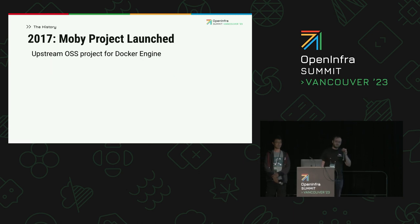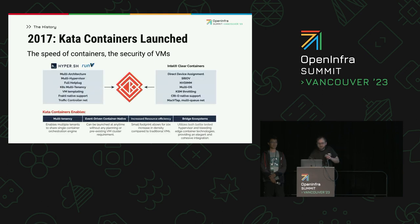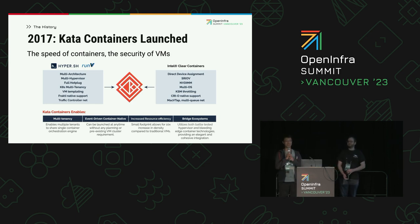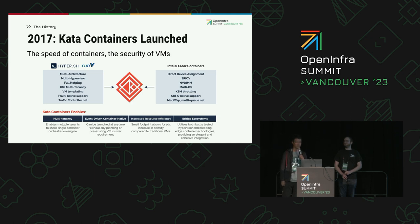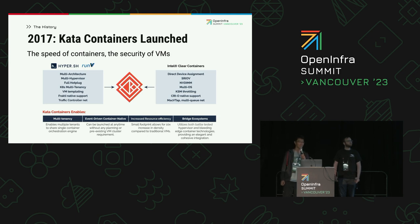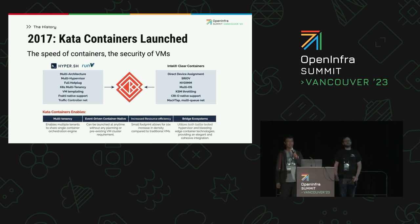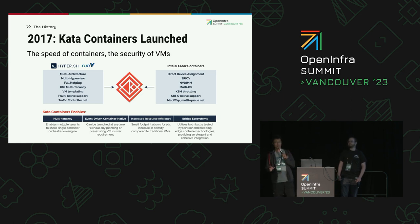In 2017, the Moby project was launched as the upstream open source project for the Docker Engine. And with that, since Docker had opened the option to support different runtimes, we started Kata Containers. It was a merge of two already open source projects — runv and Kata Containers — and we hosted it in the OpenInfra Foundation. With the name, we provide the speed of containers and the security of virtual machines.